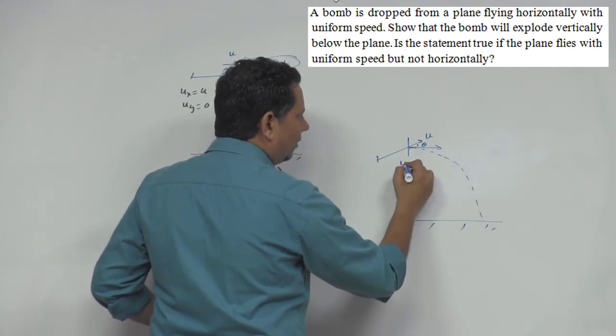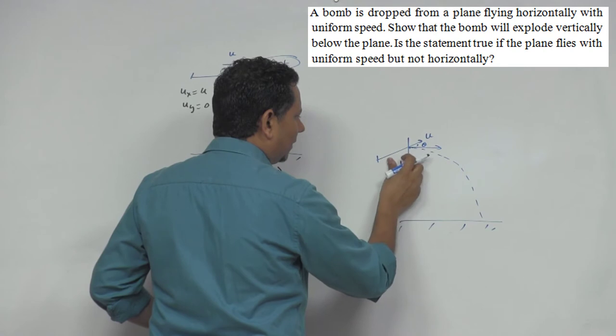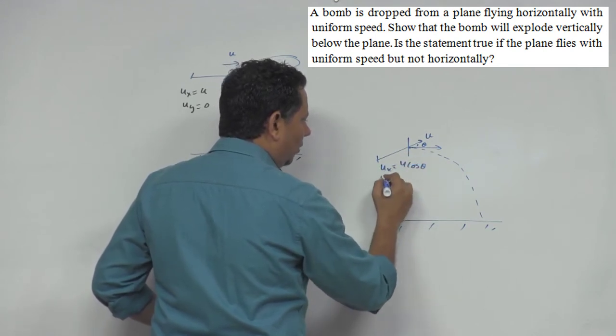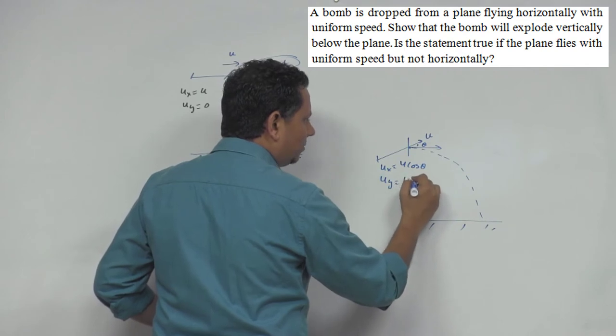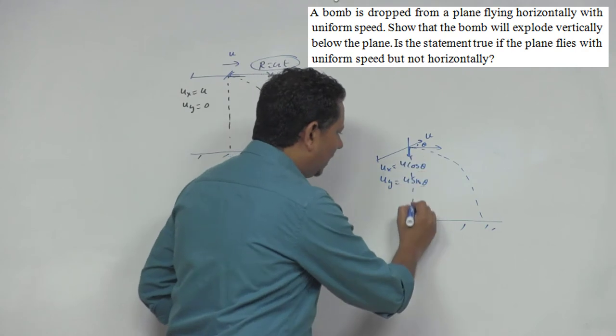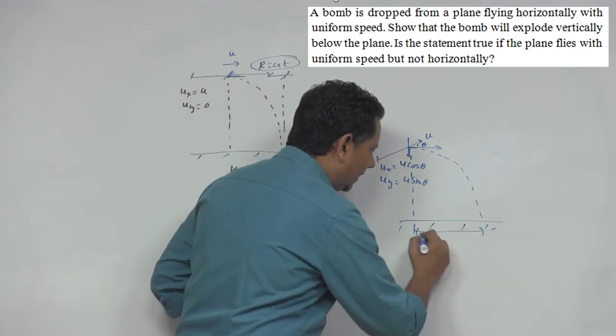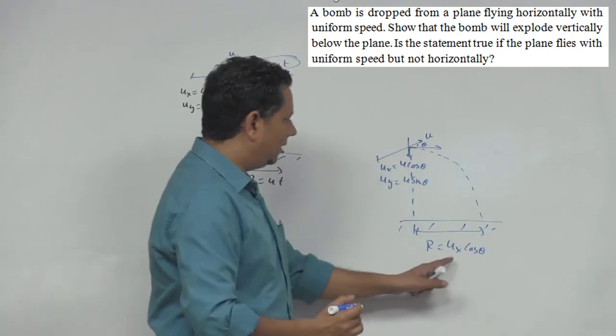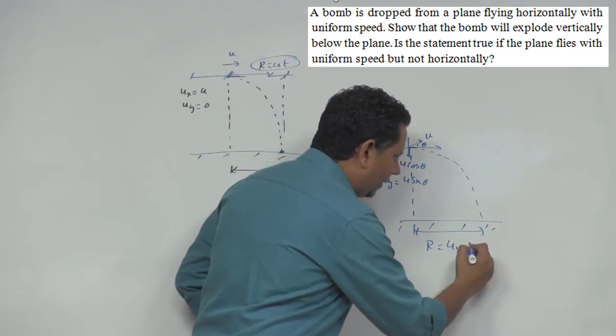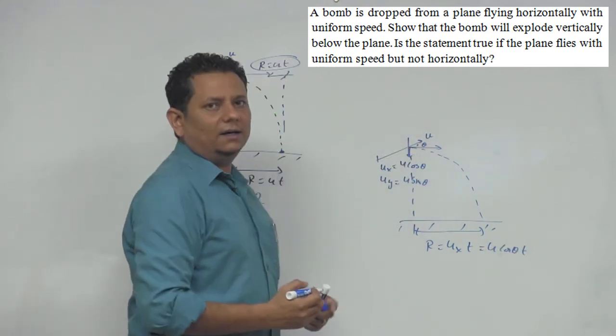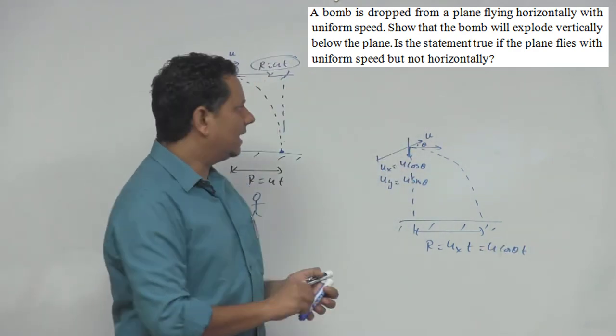Let's write this here. The horizontal velocity, u_x, will be equal to u cos theta. And u_y in the y direction will be u sin theta in this direction. Now the distance traveled from here to here, the range it covers, r, will be equal to u_x into t, which is u cos theta t. This plane, assuming it's going in the same direction with the same velocity...